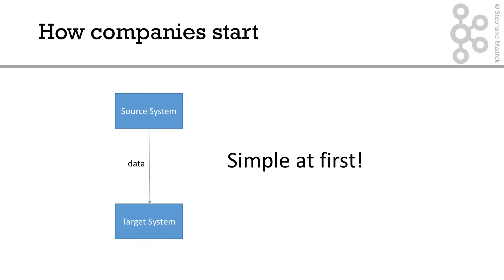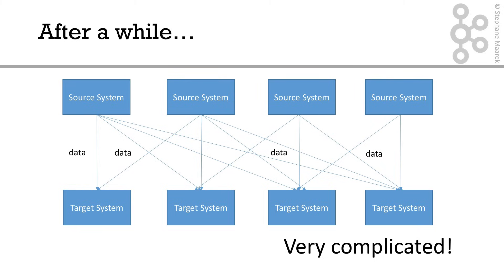Before we learn about Kafka, let's learn how companies start. At first, it's super simple. You get a source system and you have a target system, and then you need to exchange data. That looks quite simple. And then, what happens is that after a while, you have many source systems and many target systems, and they all have to exchange data with one another, and things become really complicated.